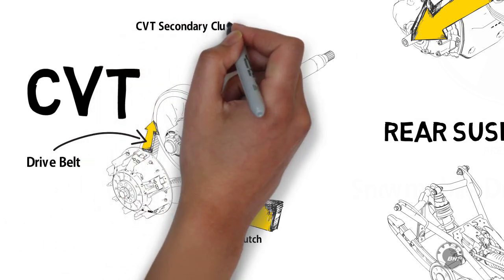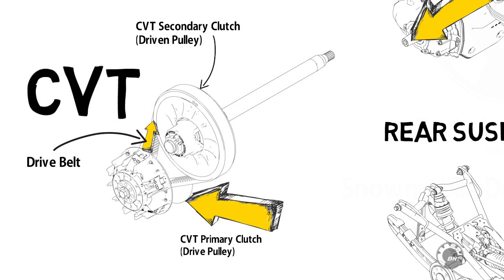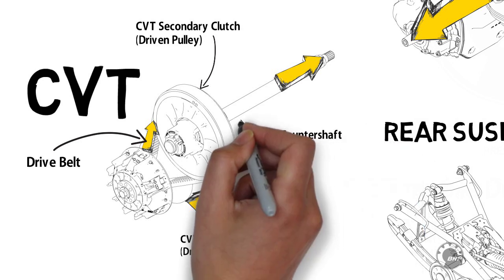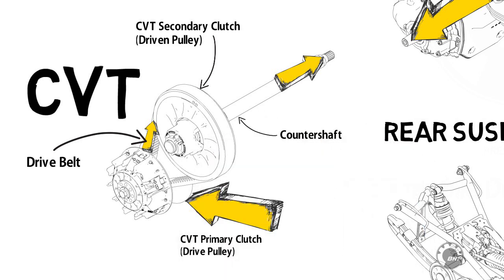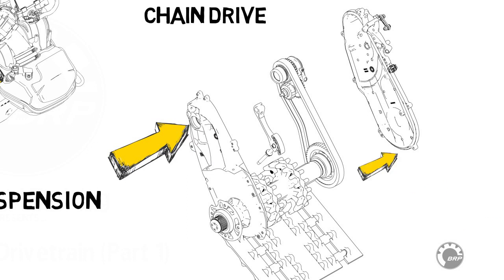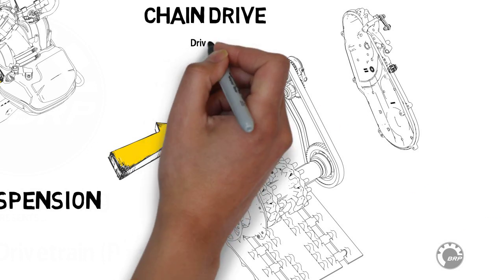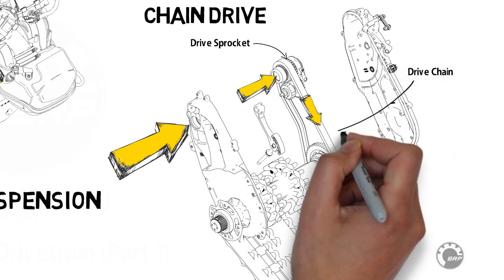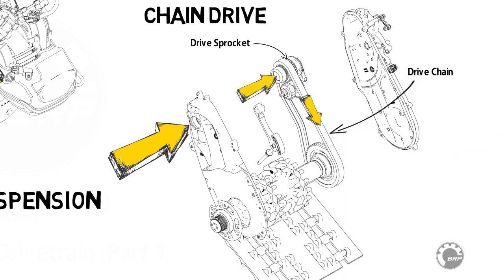The secondary clutch is attached to and also drives a countershaft. The countershaft drives the secondary chain drive system's drive sprocket, which transmits power through a chain to the chain drive's driven sprocket.